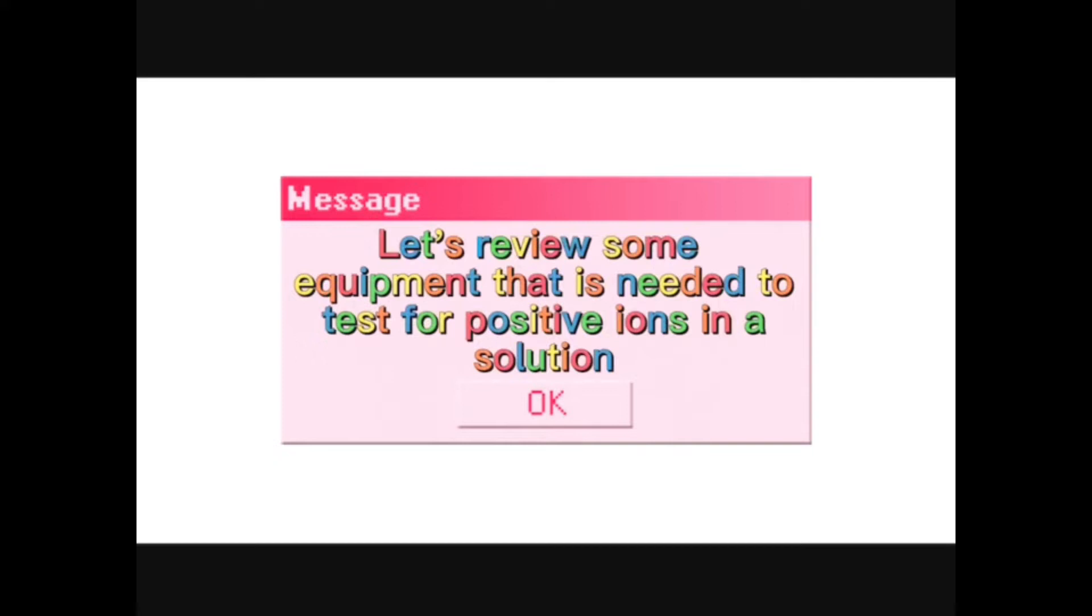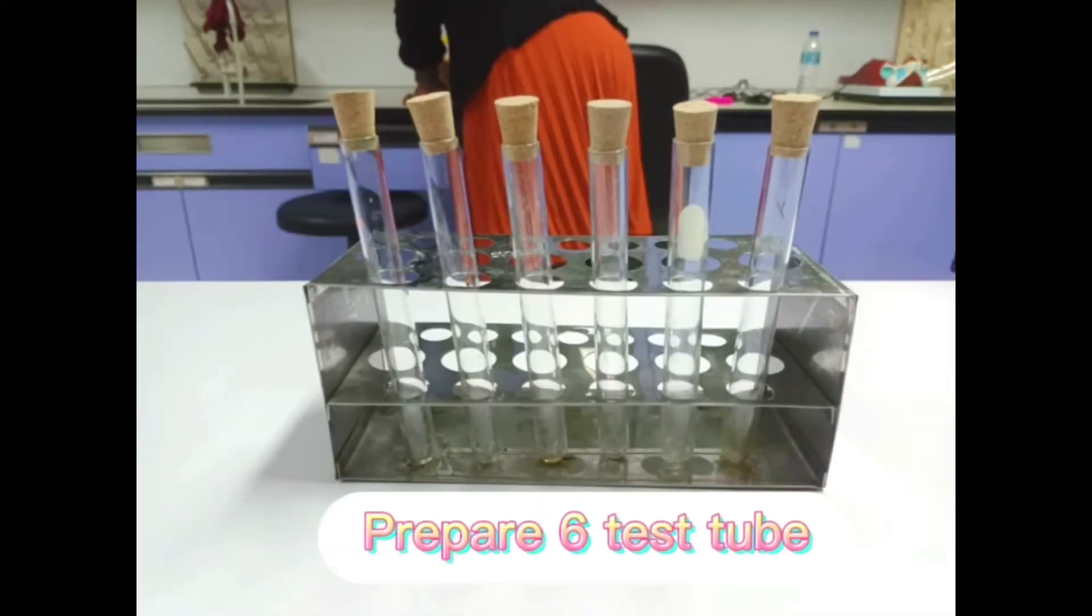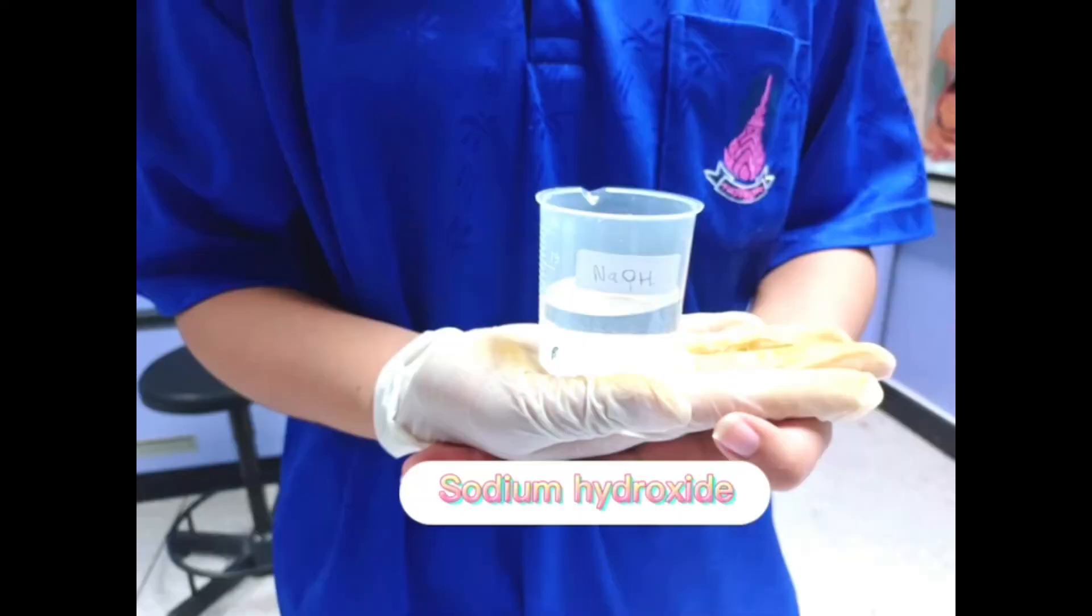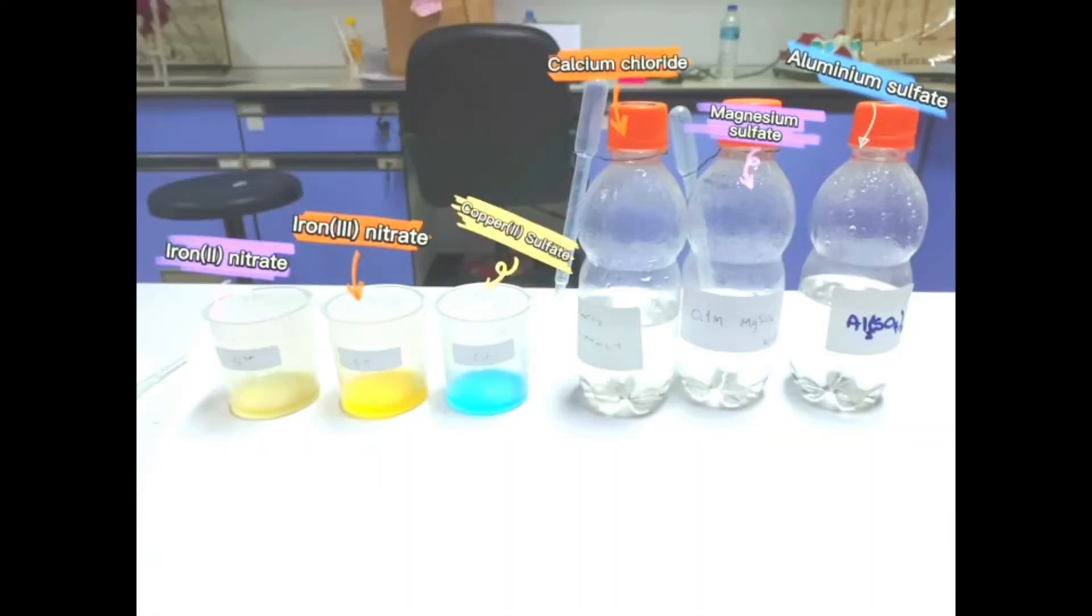Let's review some equipment that is needed to test for precipitate in ion solution. Prepare six test tubes. Sodium hydroxide, iron(II) nitrate, iron(III) nitrate, copper(II) sulfate, calcium chloride, magnesium sulfate, and aluminum sulfate.